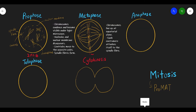For metaphase, the chromosomes line up at the equatorial plane. The equatorial plane simply means the middle of the cell, which I've drawn as a red dotted line. Each centromere attaches itself to the spindle fiber. Moving into anaphase, we draw two centrioles and the spindle fiber, which is shorter than in the previous phase.